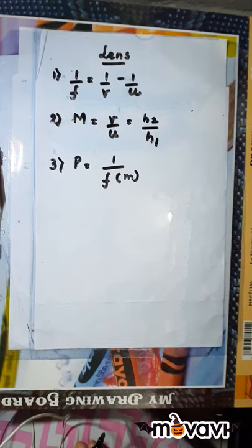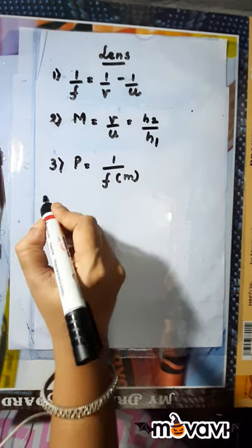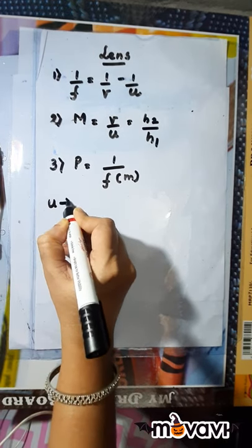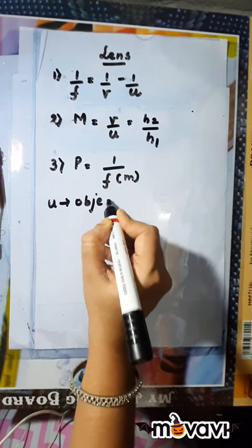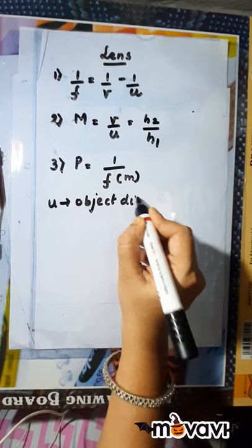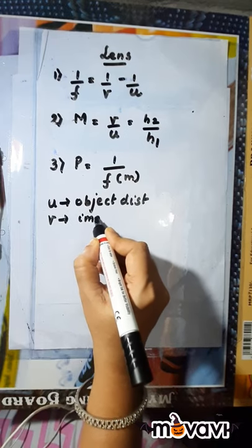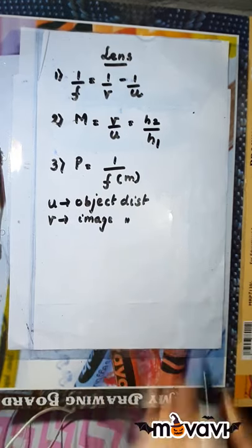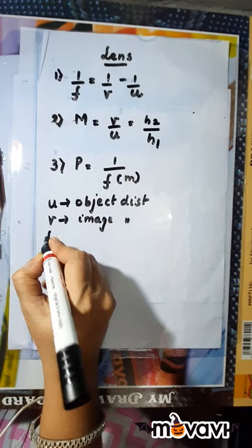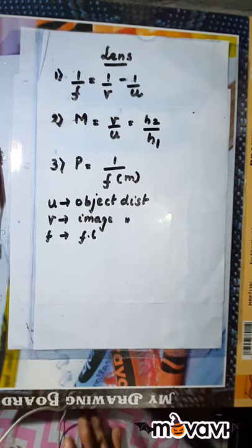Now, first for the formulae — last year we did mirrors. The formulae for lenses are as follows. The first one is 1 upon F is equal to 1 upon V minus 1 upon U. U is object distance, V is image distance — the distance that the image is formed from the lens — and F is the focal length of the lens.